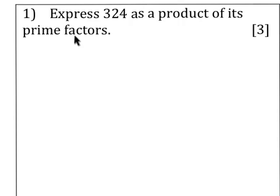Important words there: product means you need to find numbers multiplied together, and those particular numbers need to be prime numbers. Factors means that they go into 324.